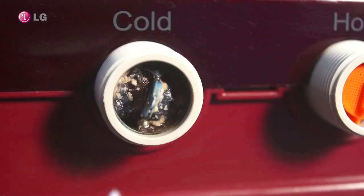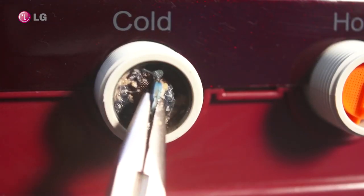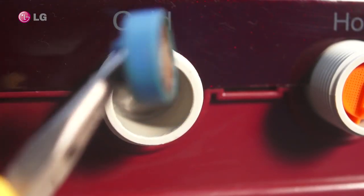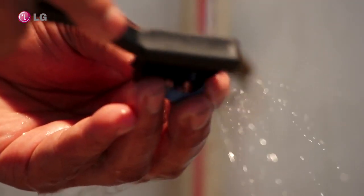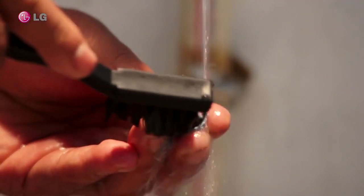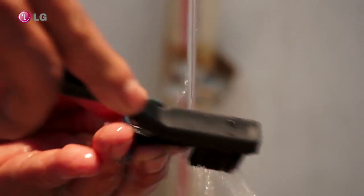In the inlet port on the unit, check the filter. Remove the filter using a nose pliers. Wash and clean the filter under running water. Use a brush to clean the filter.